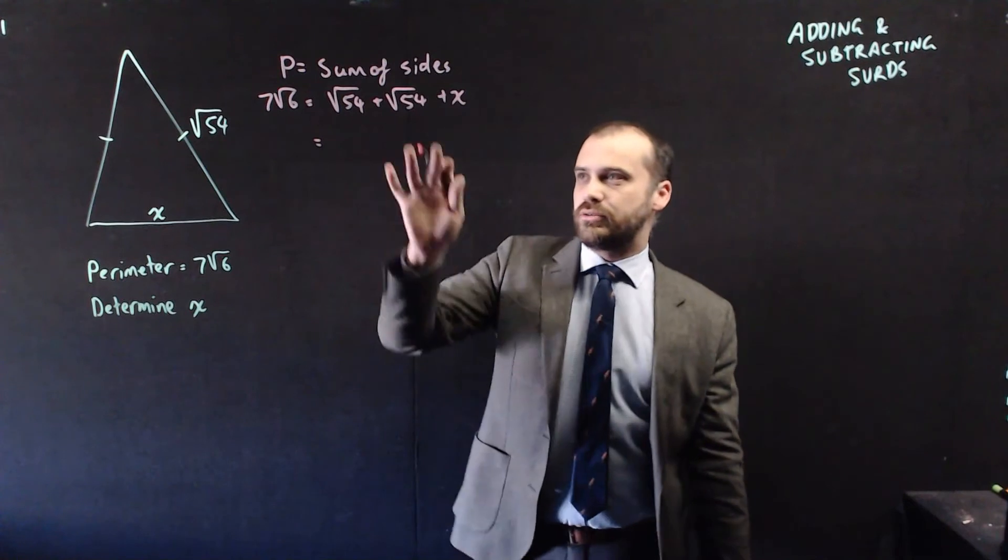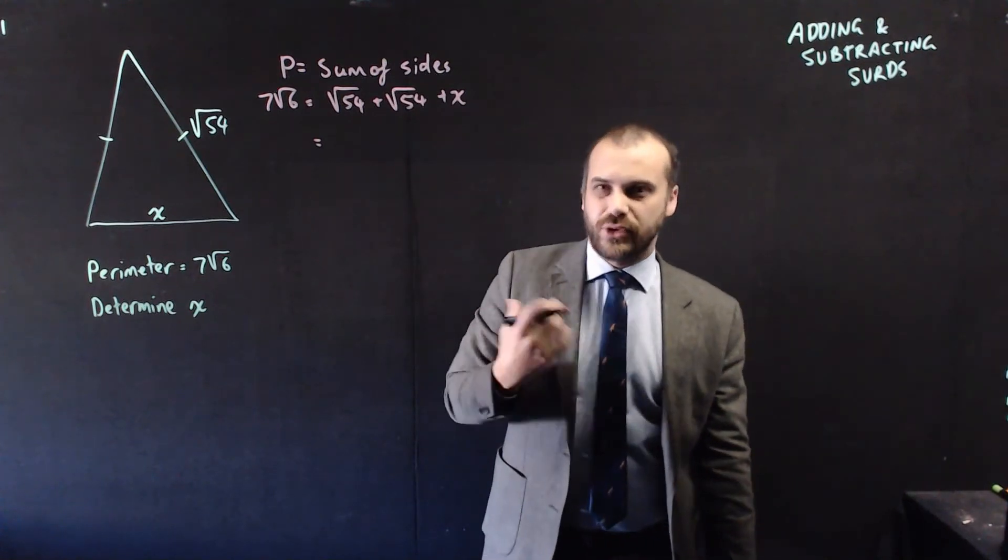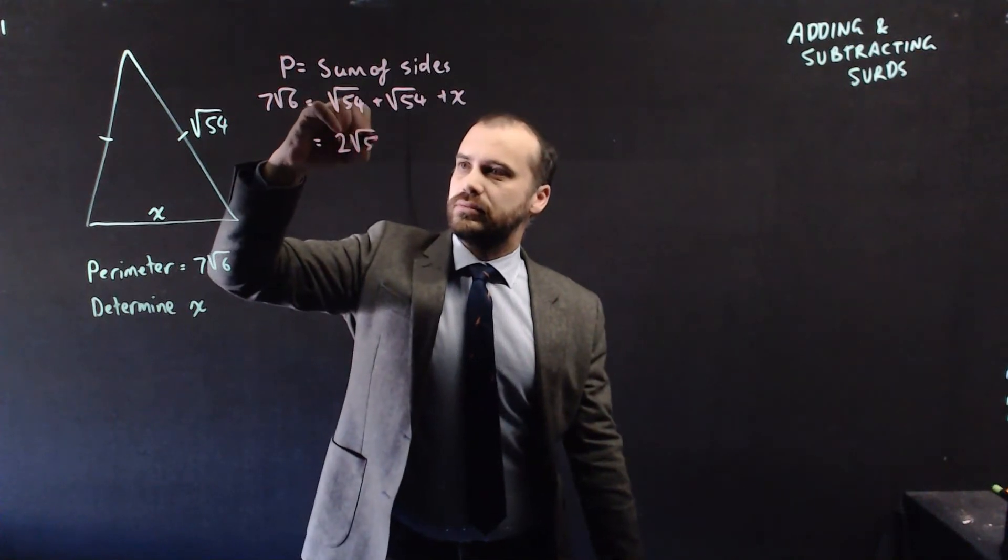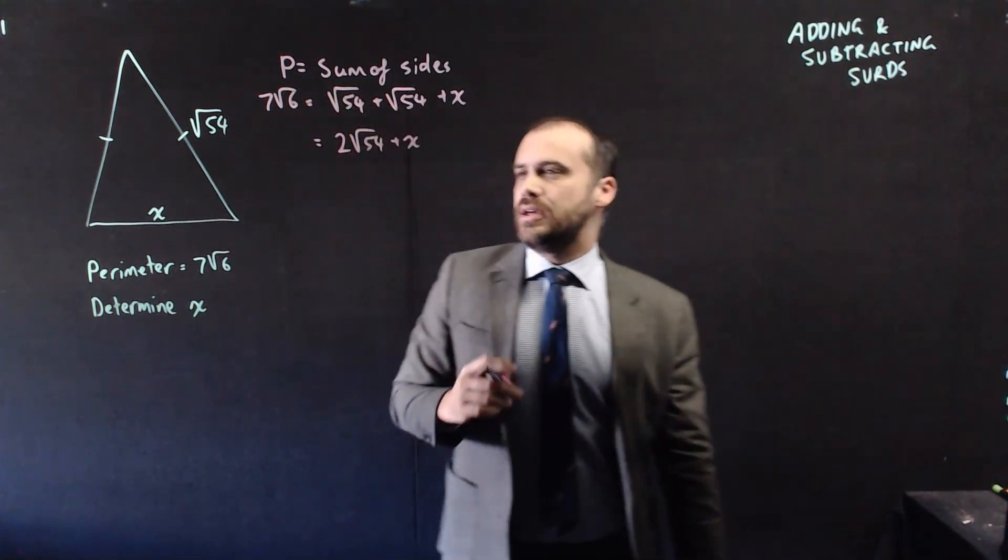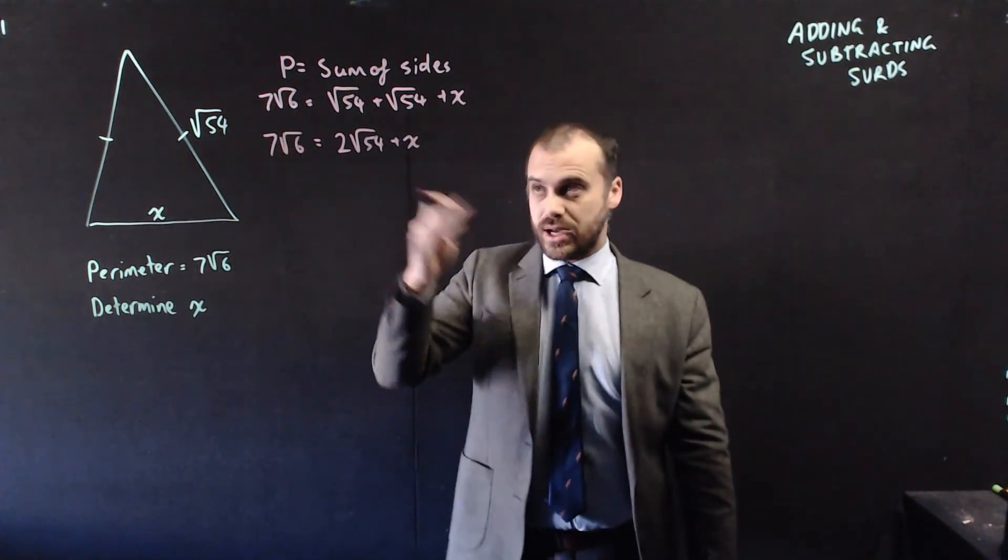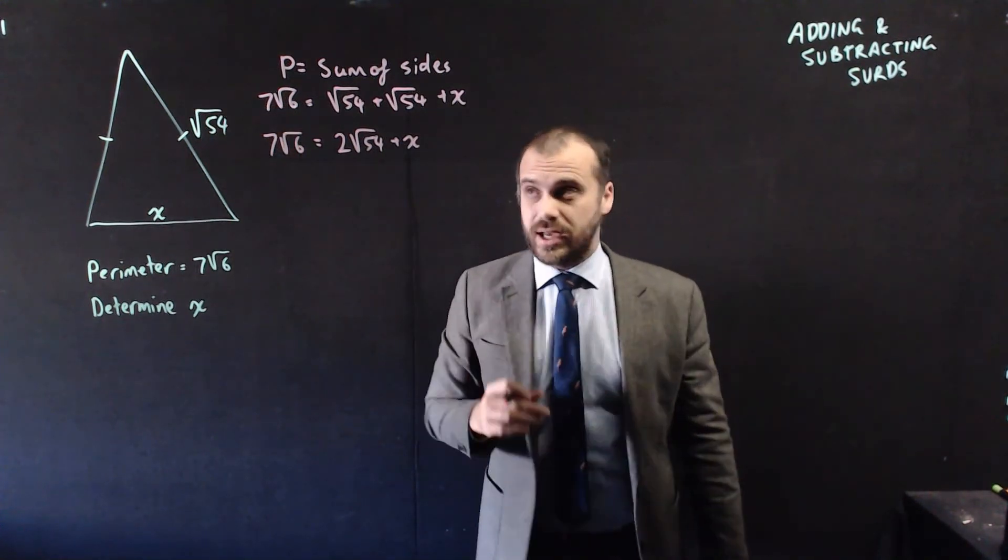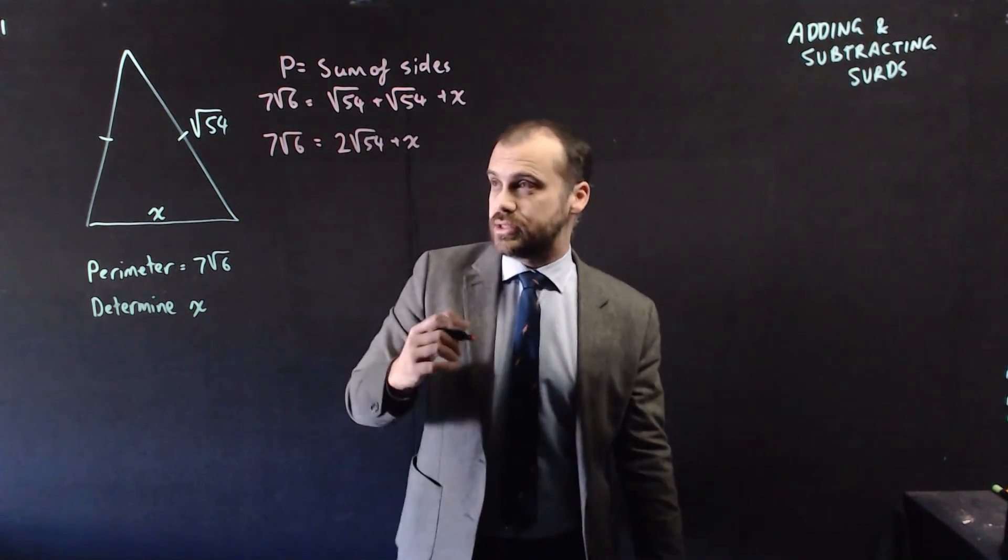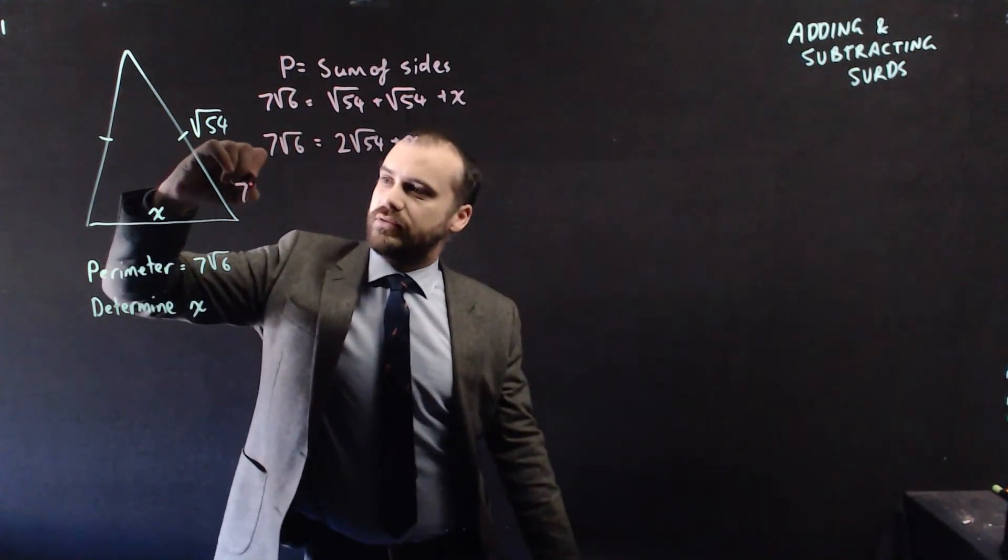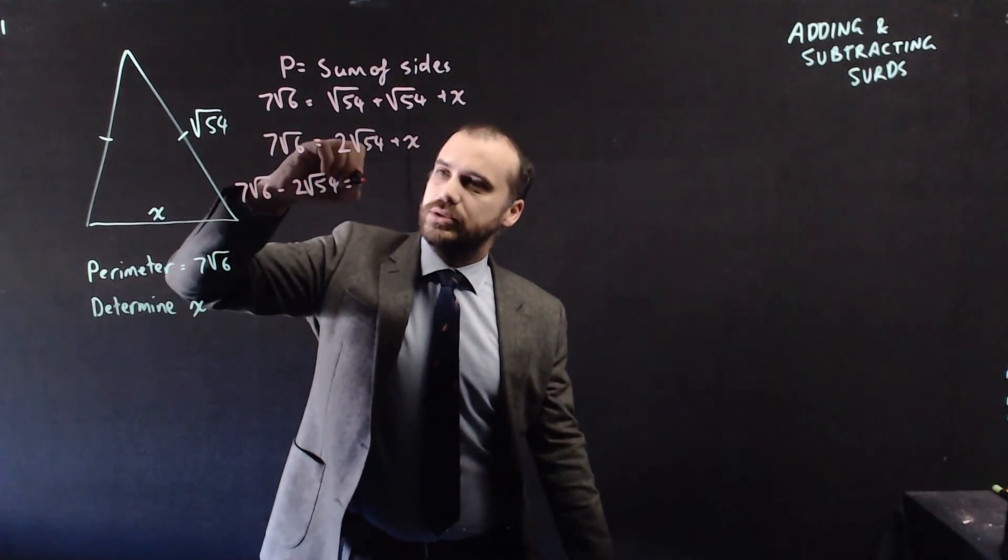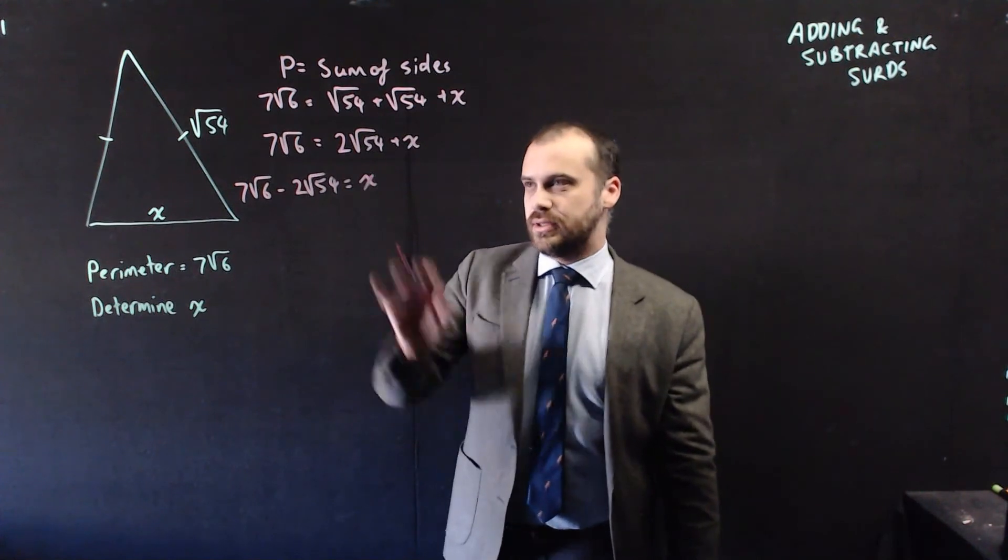Alright, so we know root 54 plus root 54. That's going to be 2 root 54 plus x. And then from here, we can start rearranging this to isolate x. So we can subtract 2 root 54 from both sides.